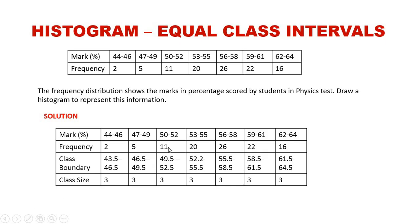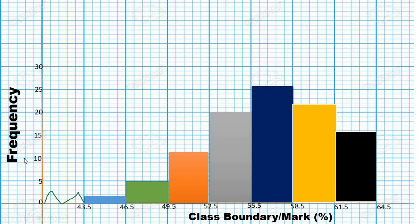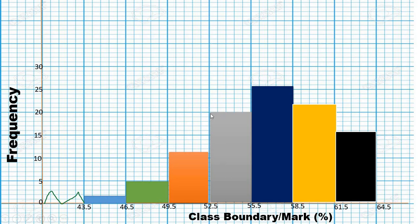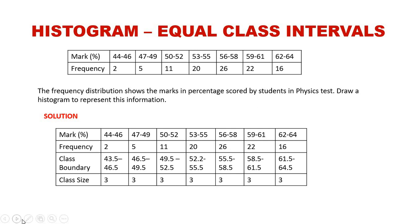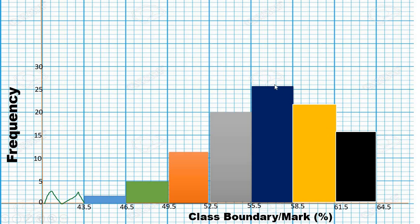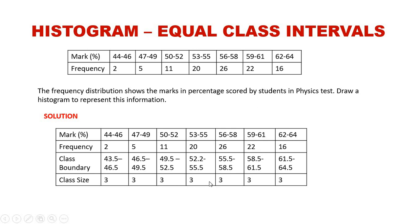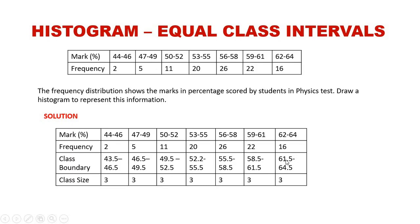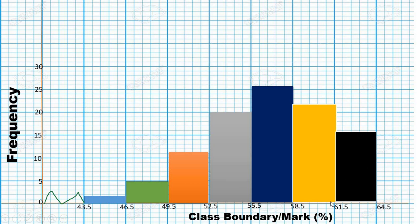The next bar has frequency 11, reaching up to 11 on the scale. Then frequency 20 for 52.5 to 55.5. An important thing to note is that the bars are connected. Next is 26, then 22, and the last bar for 61.5 to 65.5 has a frequency of 16.